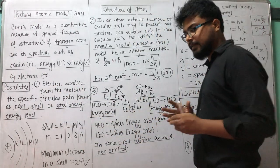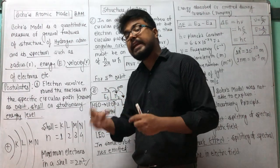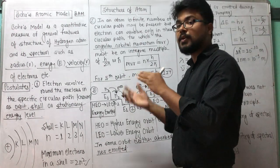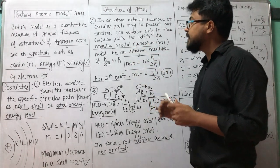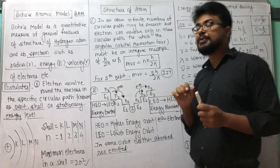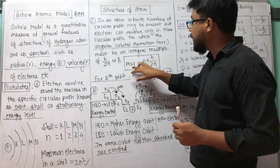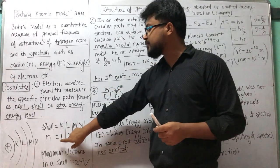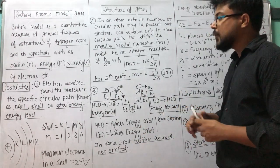In an atom, it is not like K, L, M, N, O, P — an infinite number of circular paths can be present. But electrons can revolve only in those circular paths for which the value of orbital angular momentum, that is mvr, must be an integral multiple of h upon 2π. This means for these shells, the value of orbital angular momentum will be equal to nh/2π, where n equals the number of the shell. It can be 1, 2, 3, 4, 5 for K, L, M, N shells, etc.